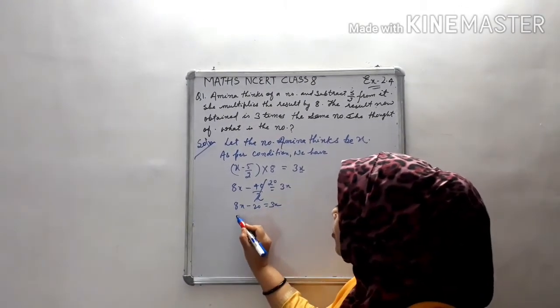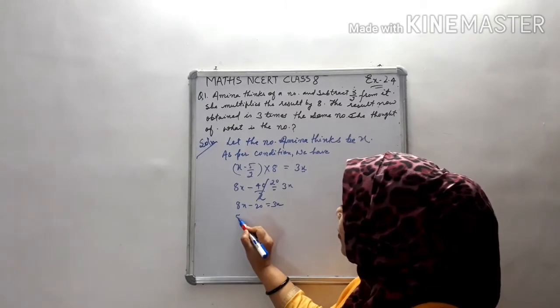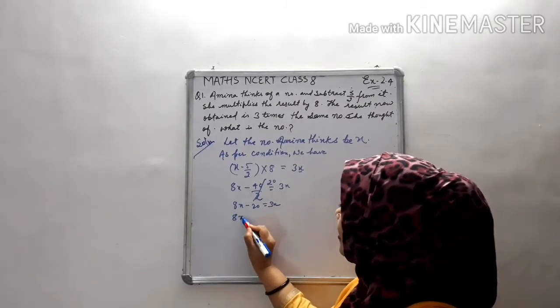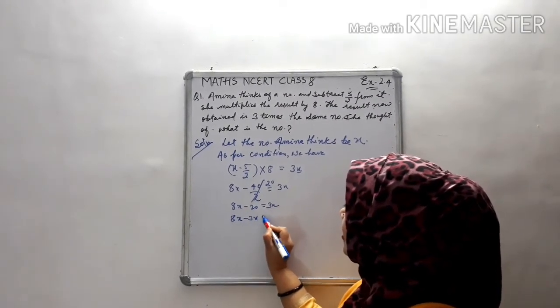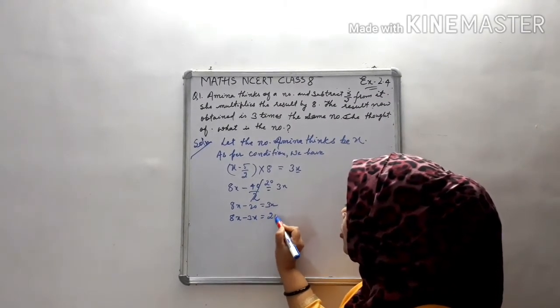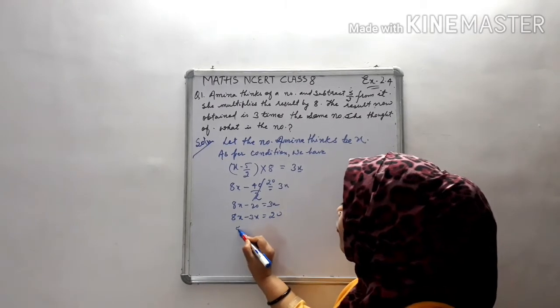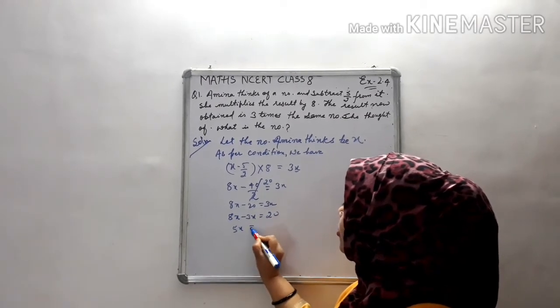Now we transpose 3x to the left-hand side: 8x minus 3x is equal to 20.